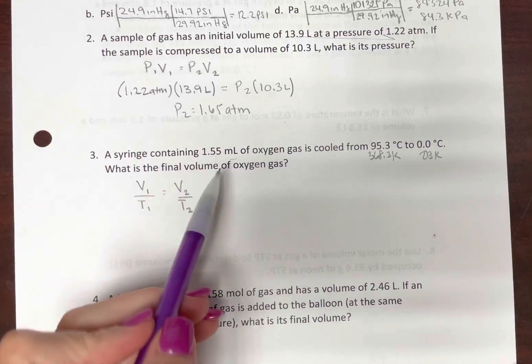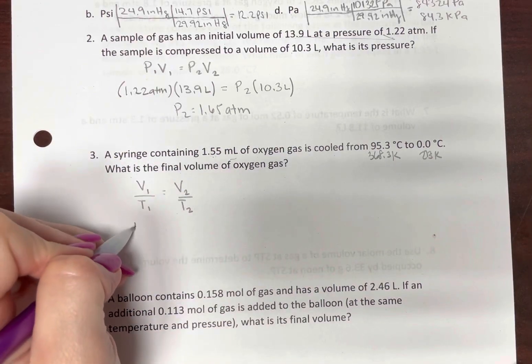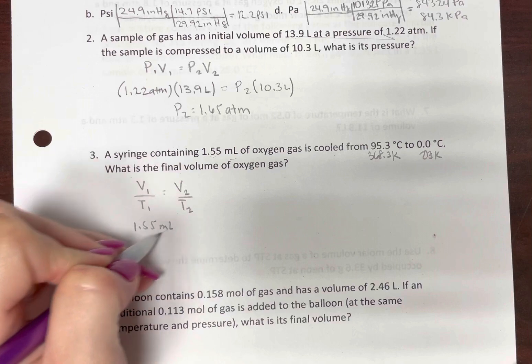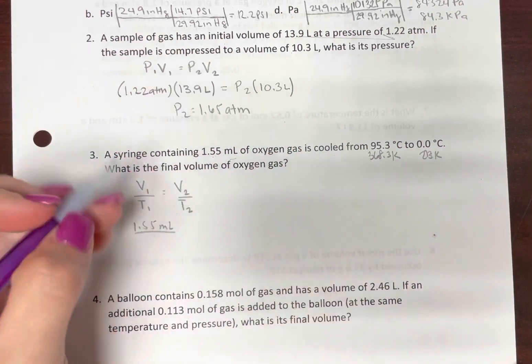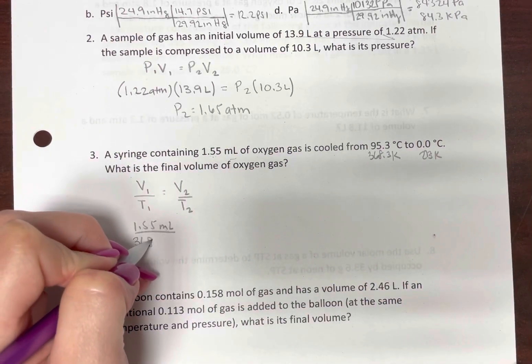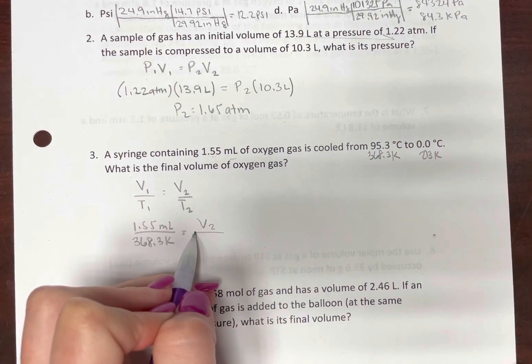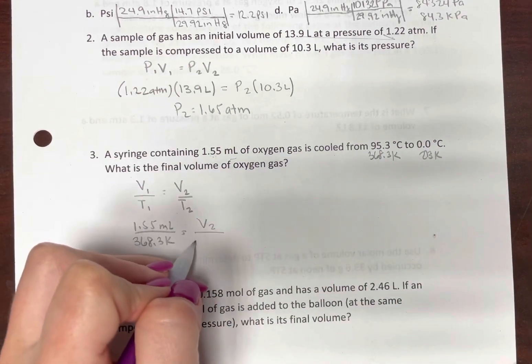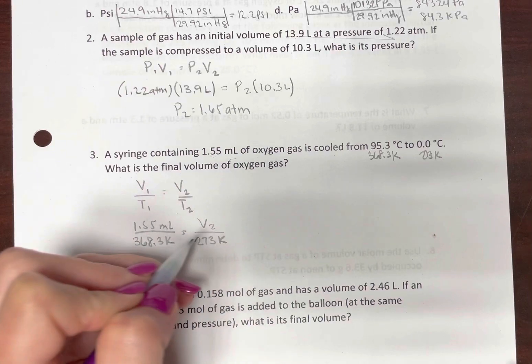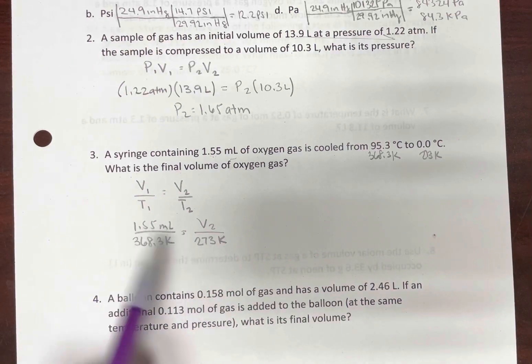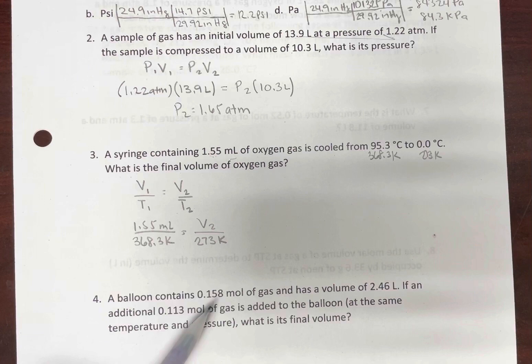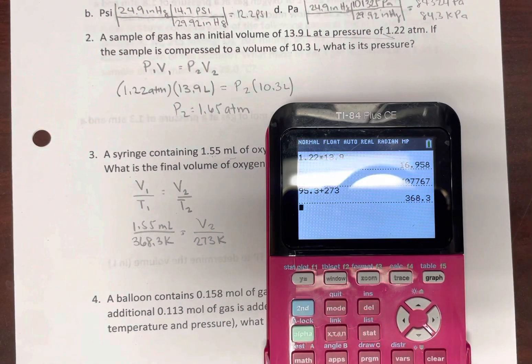Alright, so our first volume is 1.55 milliliters at this temperature, 368.3 Kelvins. We don't know what our second volume is, but we do know we're at 273 Kelvin. Otherwise, if you use zero, you cross multiply and get zero. We do not have a final volume of zero, so don't do that.